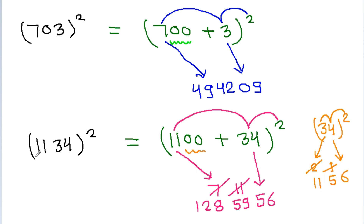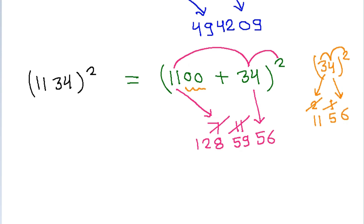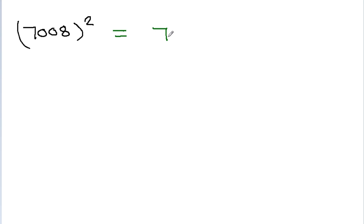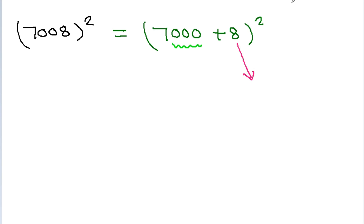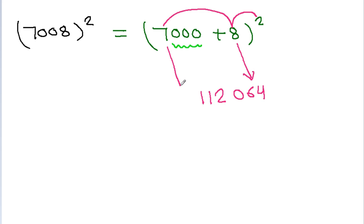And if we have to square 7008, then it is 7000 plus 8, squared. And 8 squared is 64, but we have three zeros, so we have to write three digits: 0, 6, 4. And 7 into 8 is 56, into 2 is 112, and we have three zeros, so we write three digits: 1, 1, 2. And 7 squared is 49. So that is the square of 7008.